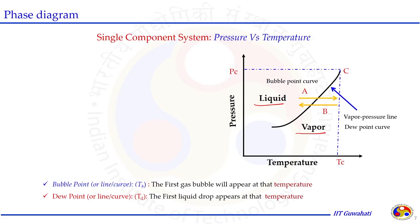For a single component system, the line that separates liquid and vapor is called the vapor pressure line or dew point curve. On one side we have liquid, and on the other side we have vapor. When moving from left to right (path A), liquid converts to vapor — this is called the bubble point curve. When moving in the other direction (path B), vapor converts to liquid — this is called the dew point curve. For example, if we are in the liquid region and increase temperature at constant pressure, the substance goes into the vapor phase. Or if we cool at constant pressure, the gas condenses into liquid.